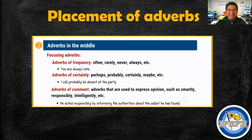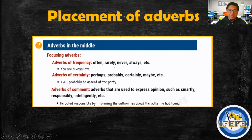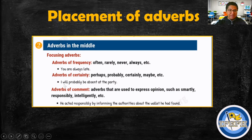Case number two: adverbs in the middle. Some adverbs of frequency go in the middle of a sentence — for example: often, rarely, never, always, etc. 'You are always late.' Also, adverbs of certainty go in the middle — perhaps, probably, certainly, maybe, etc. For example: 'I will probably be absent at the party.'